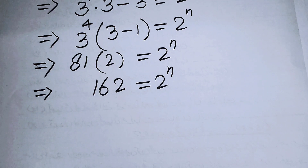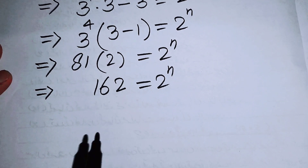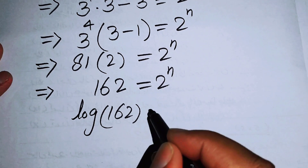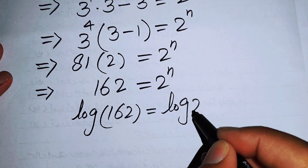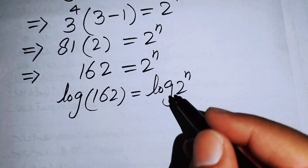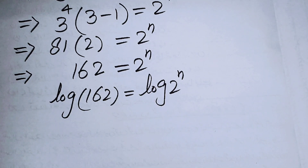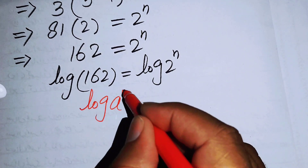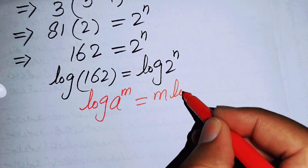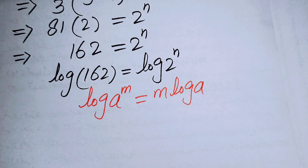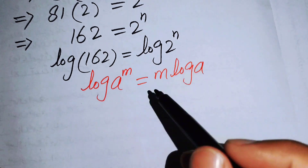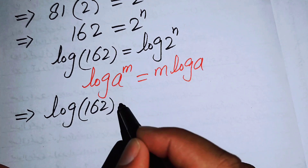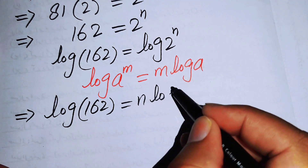Our goal is to find the value of n. To do so, we take the log on both sides: log of 162 equals log of 2 to the power of n. Now we apply the logarithm property — log of a to the power of m equals m times log a — so we get log of 162 equals n times log 2.